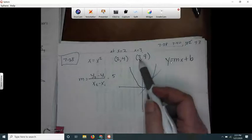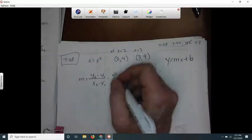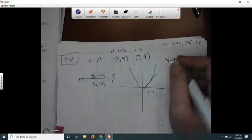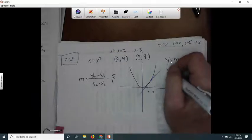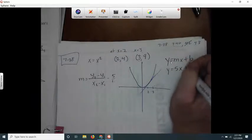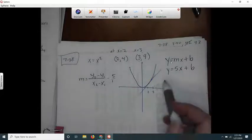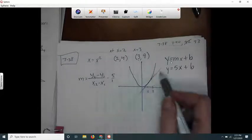And then it's 3 minus 2 which is 1, so I think m is going to be 5. And then I can use the x and y that I know is on the line, so I'll just use this x and y and find out.